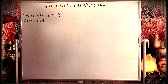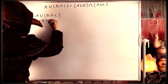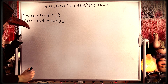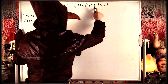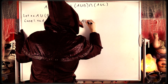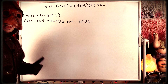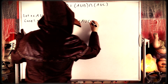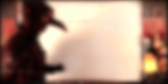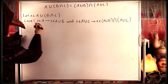If X is an element of A, then by definition of set union, X must be an element of A union B. Similarly, since X is in A, it also belongs to A union C — again by definition of set union. So X is an element of A union B and X is an element of A union C. Thus, by definition of set intersection, X is an element of (A union B) intersect (A union C). That's case one: X being in A forces X to be in (A union B) intersect (A union C).